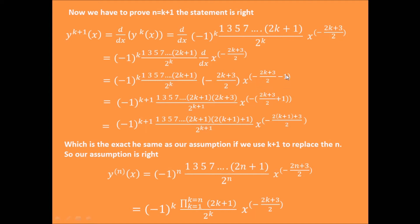We take the minus out of the two terms, so we get minus parenthesis 2k plus 3 divided by 2, plus 1. After simplification, we get minus 1 to the power of k plus 1 times 1 times 3 times 5 times 7 times ... times 2k plus 1 times 2 times k plus 1 plus 1, divided by 2 to the power of k plus 1, times x to the minus 2 times k plus 1 plus 3 divided by 2. As you can see, this expression is exactly what we get when we put n equals k plus 1 into the assumption.